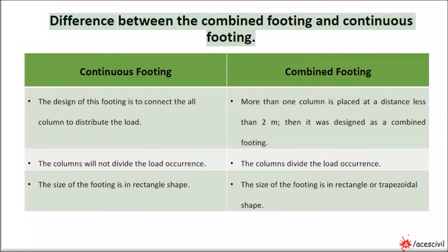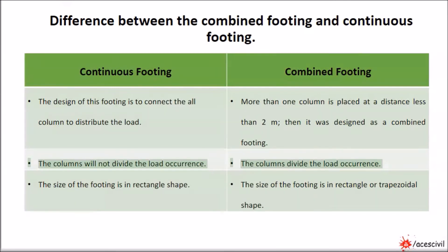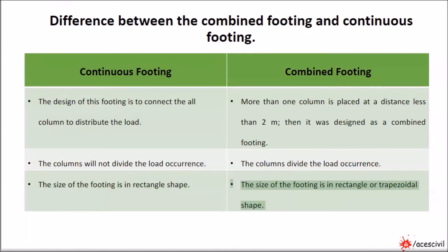Difference between combined footing and continuous footing. Continuous footing: The design of this footing is to connect all columns to distribute the load. The columns will not divide the load occurrence. The size of the footing is rectangular in shape. Combined footing: More than one column is placed at a distance less than 2 metres, then it is designed as a combined footing. The columns divide the load occurrence. The size of the footing is rectangular or trapezoidal in shape.